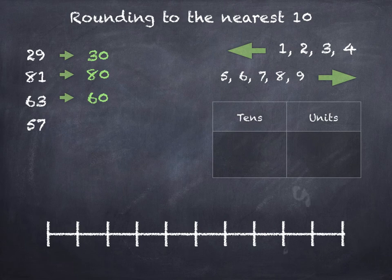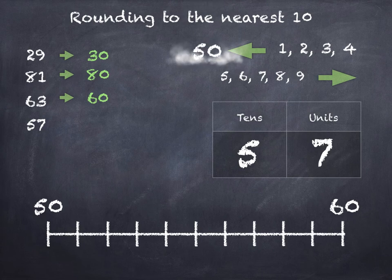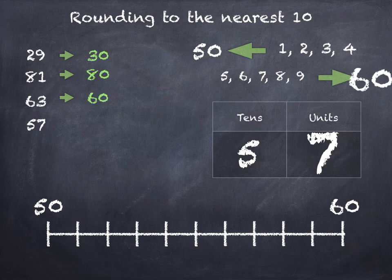57. 5 tens and 7 units, sits between 50 and 60 on the number line. So we can round down to 50 or up to 60. The units digit is 7 and that tells us that we will be rounding up to 60. 57 is closer to 60 than it is to 50 on the number line.